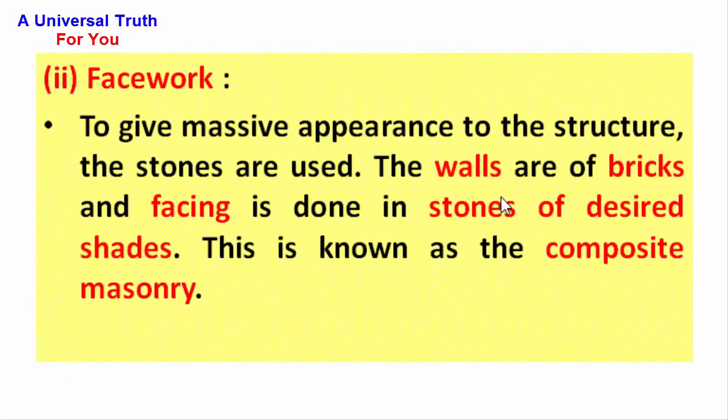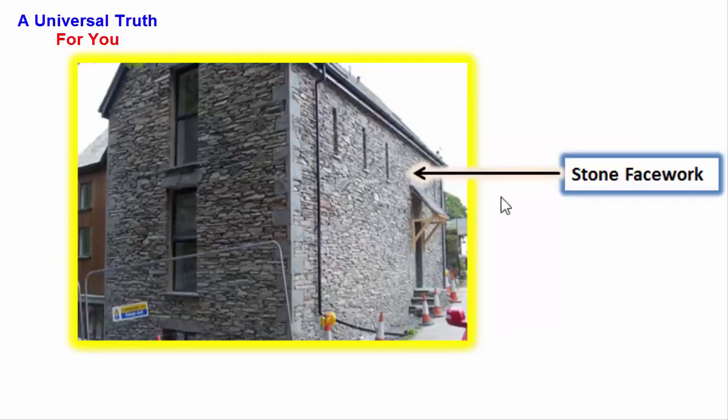Second, facework. To give massive appearance to the structure, the stones are used. The walls are of bricks and facing is done in stones of desired shades. This is also known as composite masonry. This is the outside picture of a house and we can see this is the stonework.